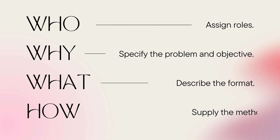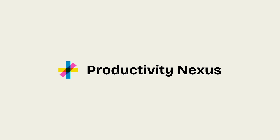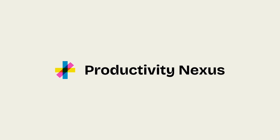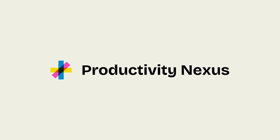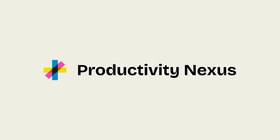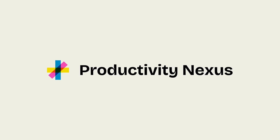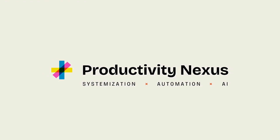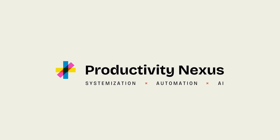I'm going to break those down into smaller rules with a handful of examples for each one. Not every rule applies to every prompt you write, but the more boxes you can check, the better the chatbot will serve your needs. For your reference as you practice this method, you'll find all the rules and even more examples available as a cheat sheet on Productivity Nexus — it's linked in the YouTube description. And while you're there, be sure to subscribe to the newsletter for more insights at the intersection of systemization, automation, and AI.